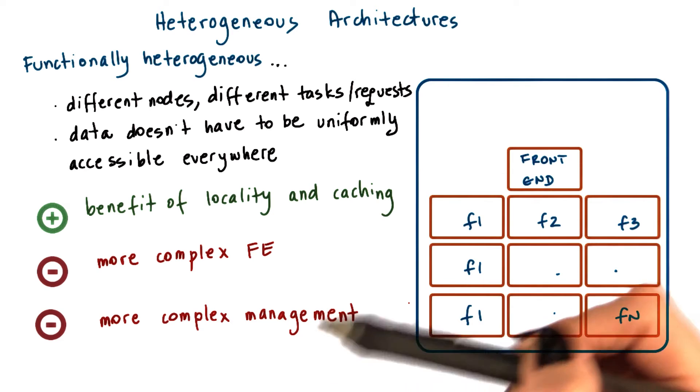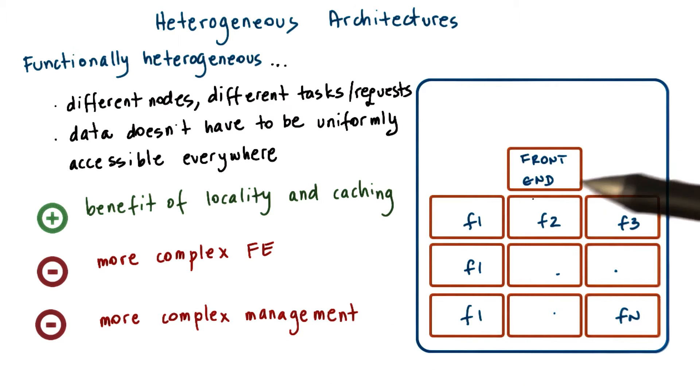There are also some obvious trade-offs. The first one is that the front end will now need to be more complex, because it will need to parse sufficient portions of the incoming requests to figure out which underlying node this particular request should be passed through.